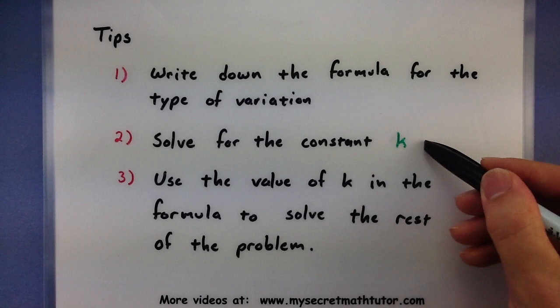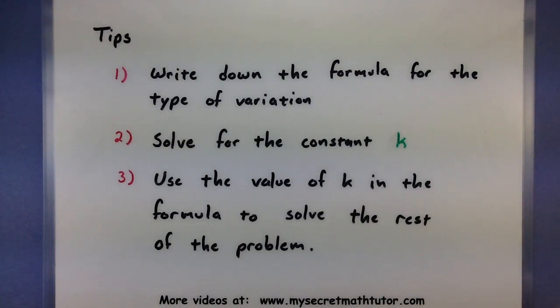Once we have our formula, we'll go ahead and solve for our constant of proportionality k. And once we have the k, we'll put that into our original formula and then solve the rest of it.